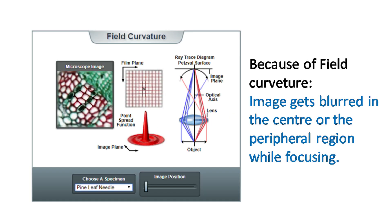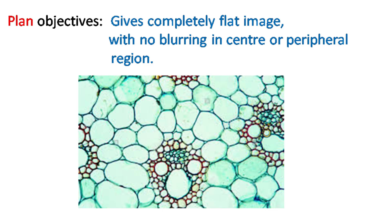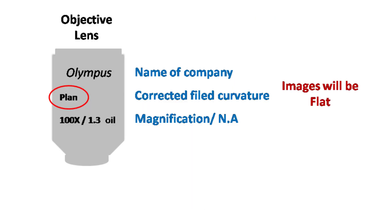Field curvature is a common aberration caused by the spherical surface of convex lens. In this phenomenon, not all parts of an image are clearly focused. While focusing in the center of an image, the peripheral region gets blurred, and while focusing in the peripheral region, the central region gets blurred. To avoid the problem of field curvature, modern objectives are designed to give a clear flat image with no blurring in center or the edge. The objectives with corrections in field curvature are called plan objectives.